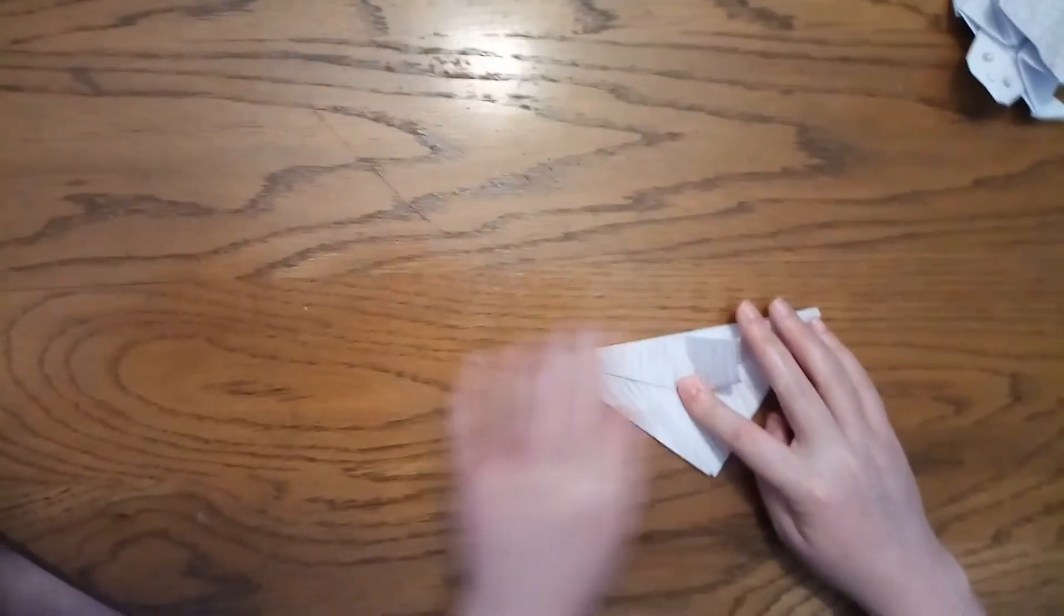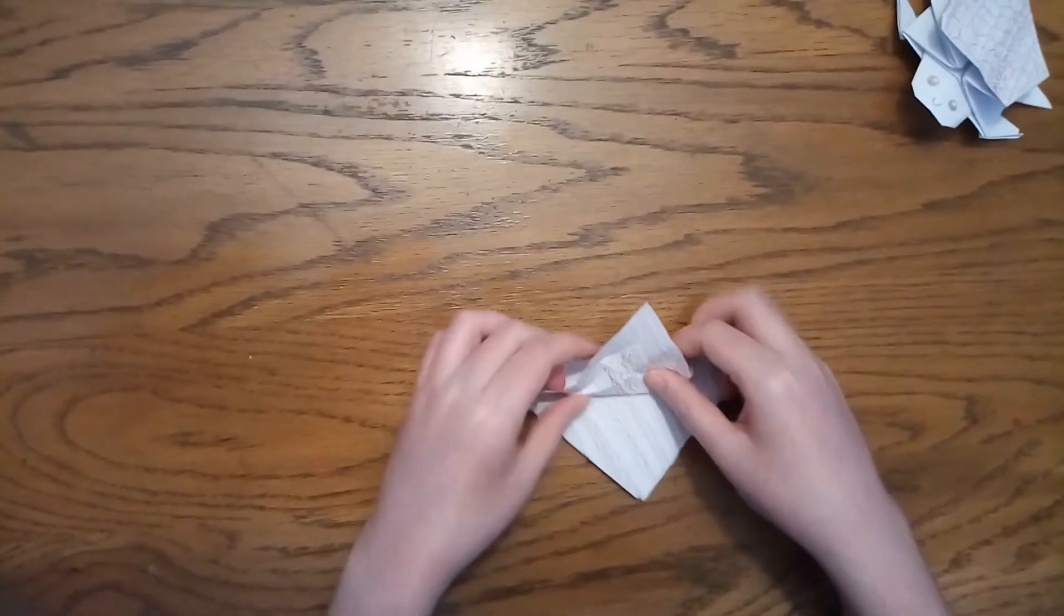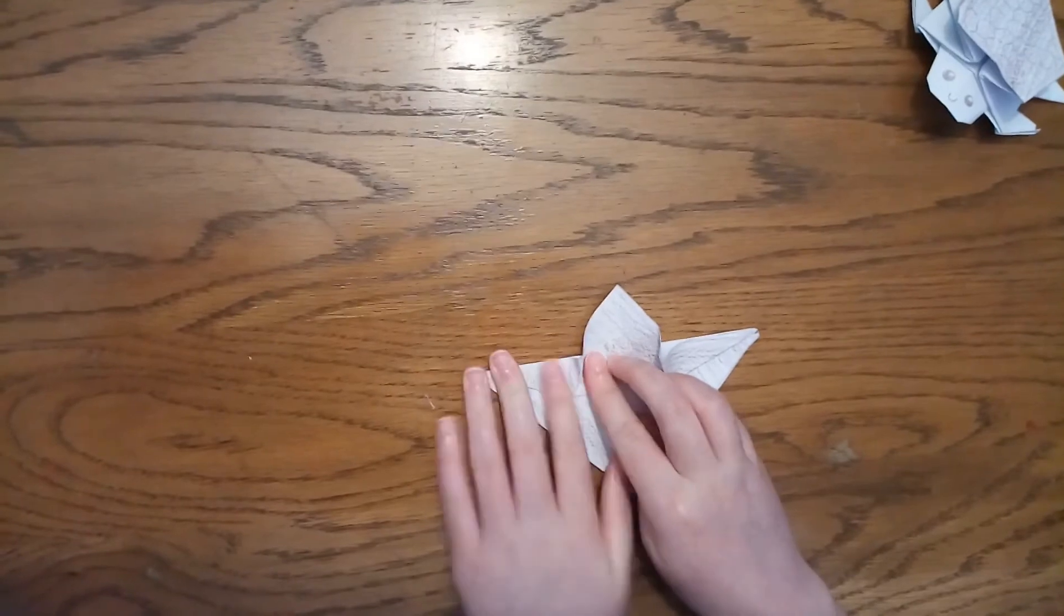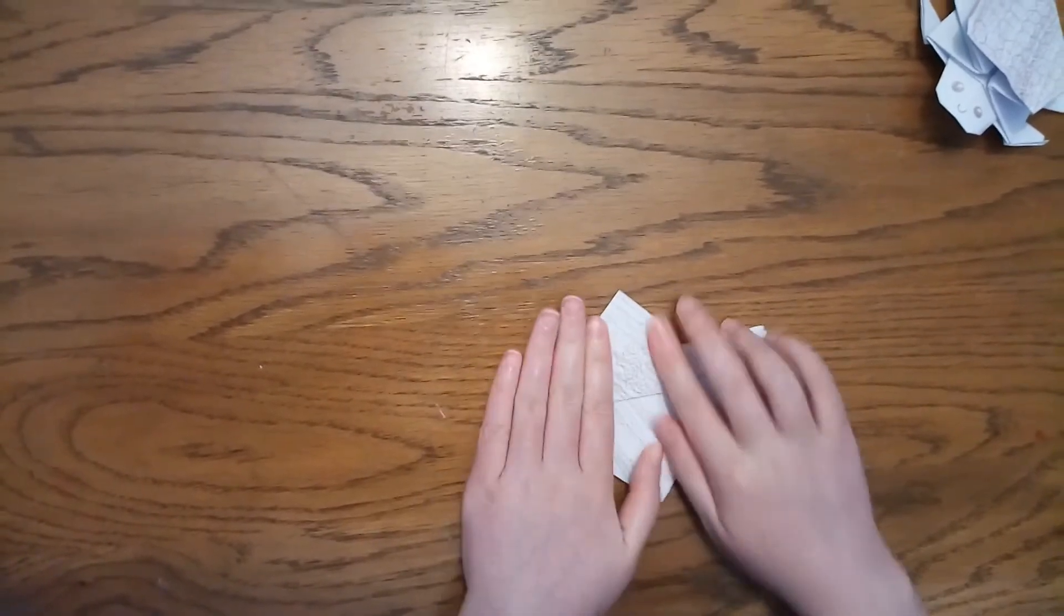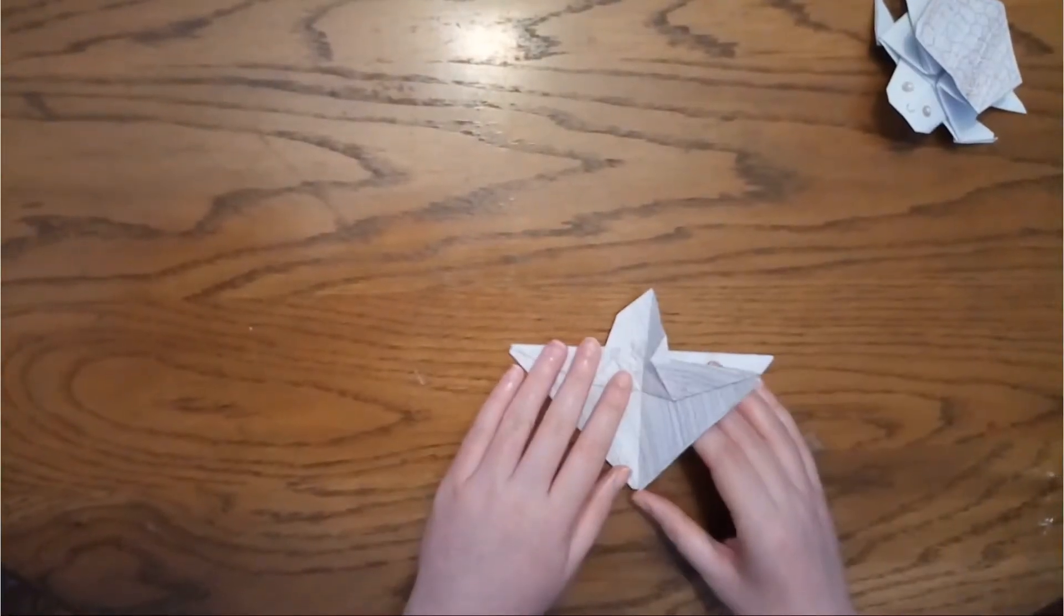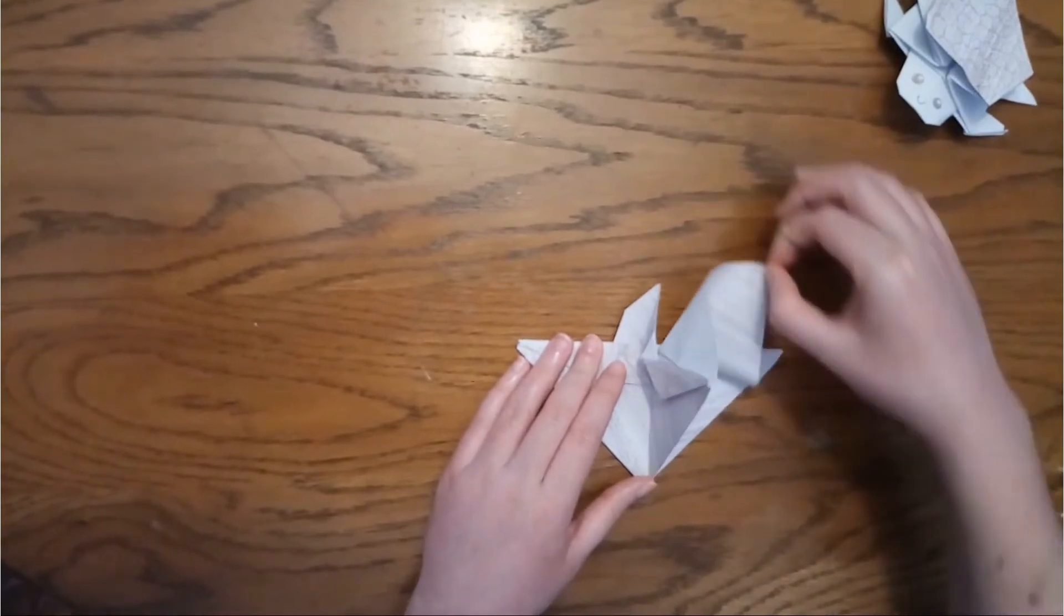Again, just making it so this line is the same as that line. Then bringing it back to this line here. We want to make sure it's flat. Just make that line and fold it over and in. There we go.